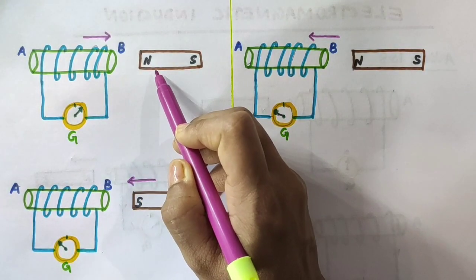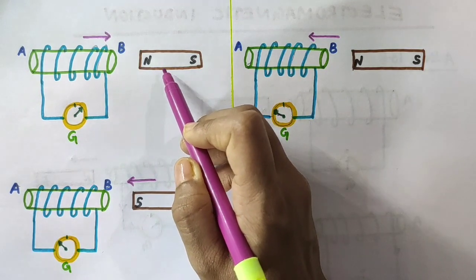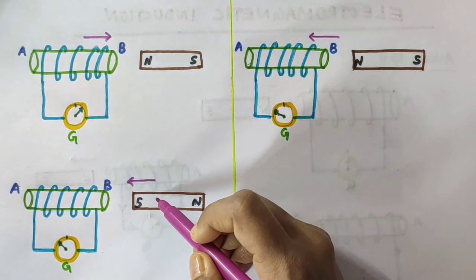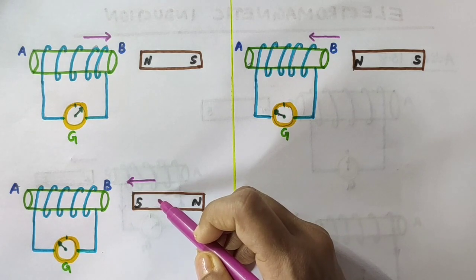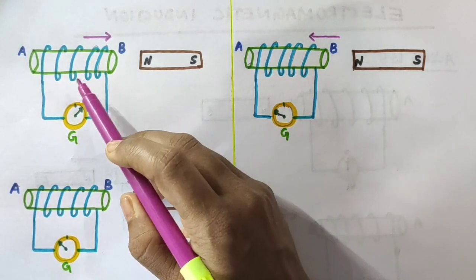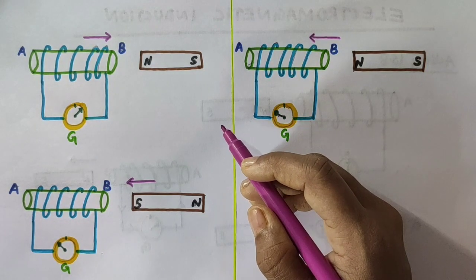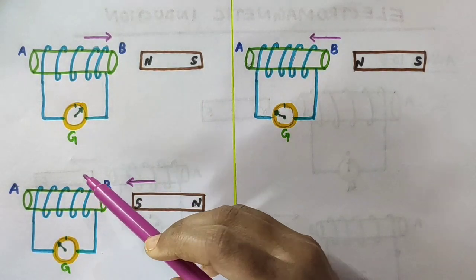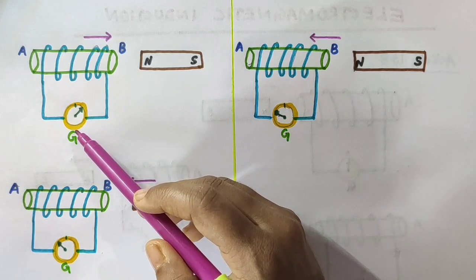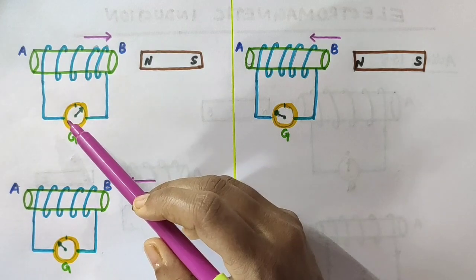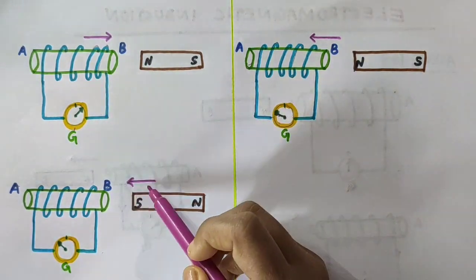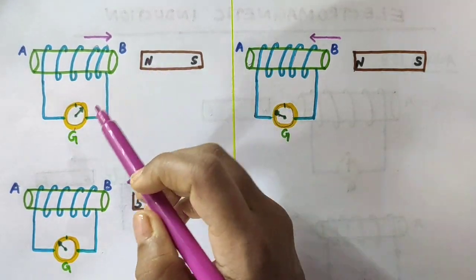So what can we conclude? When the coil and the magnet are both stationary, there is no deflection in the galvanometer — no current is set up in the coil circuit. But a moving magnet towards the coil or moving away from the coil sets up a current in the coil. Similarly, a moving coil towards or away from the magnet sets up a current in the coil. That is, the relative motion of the magnet with respect to the coil sets up a current in the coil, and that is why the galvanometer deflects.